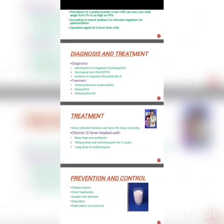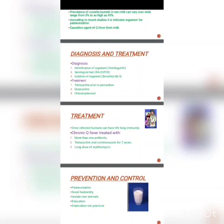For diagnosis, it mainly includes identification of the microorganism, histology — the art of recognizing cell structure and its function — and serological tests, which are blood tests to detect the presence of antibodies against the microorganism and determine whether a person has been exposed to a particular microorganism. Isolation of the organism is performed in a biosafety level 3 lab, not lab 1 or 2, because it is a very dangerous organism.